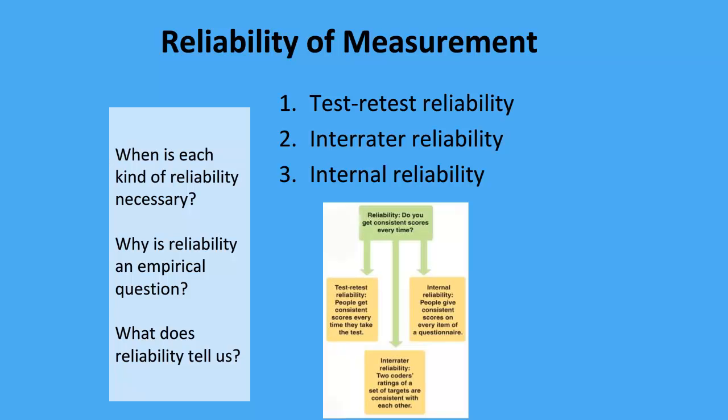With test-retest reliability, say I give you an IQ test right now, and then give you that same IQ test in a week or so. If the test has test-retest reliability, you should score about the same both times, given that nothing substantial changes within you. So upon different administrations of the measurement, are you getting consistent scores?